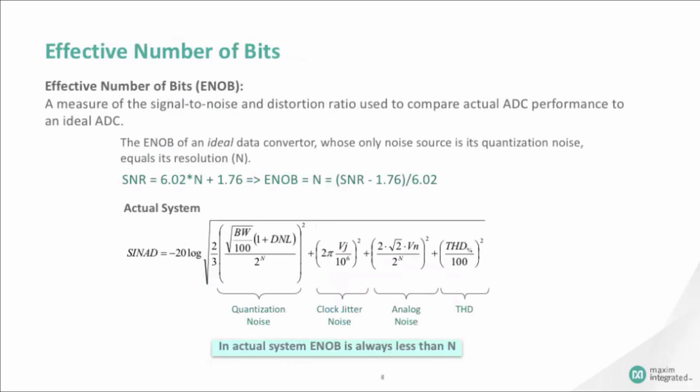Effective number of bits, or ENOB, is a measure of an ADC's signal-to-noise ratio and distortion. It is an AC performance specification, and is an alternative way of stating another term, called signal-to-noise and distortion, or SINAD. In an ADC of n-bit resolution, ENOB is equal to N, which is equal to the signal-to-noise ratio, minus 1.76 dB, and divided by 6.02 dB. This comes from an equation that lets us predict SNR for a sine wave input based only on the ideal quantization noise for an n-bit converter.